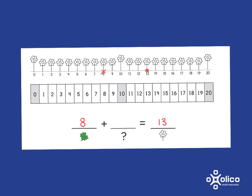And then, from 10 to 13 is a jump of 3. So in total, the little frog has jumped 2 and 3, so the little frog has jumped 5. And they can write the answer in there.